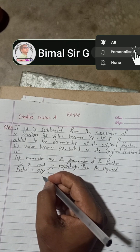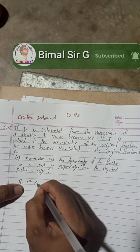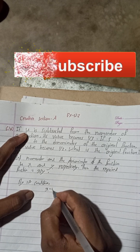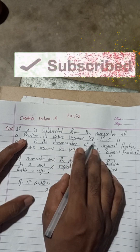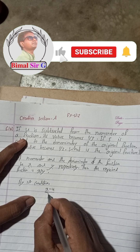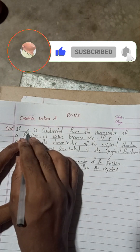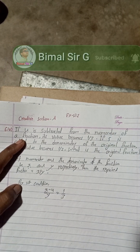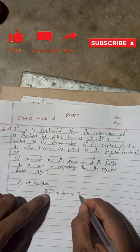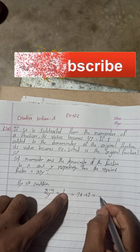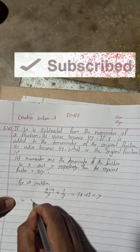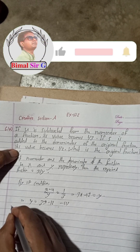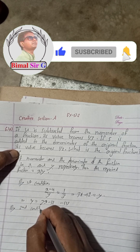By the first condition: if 4 is subtracted from the numerator, the fraction becomes 1/3. So we write (x − 4)/y = 1/3. Cross-multiplying: 3(x − 4) = y, which gives 3x − 12 = y. Therefore y = 3x − 12. This is Equation 1.